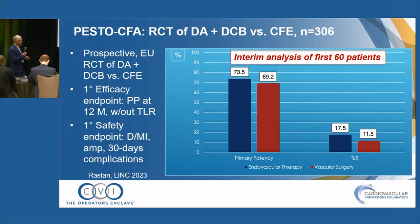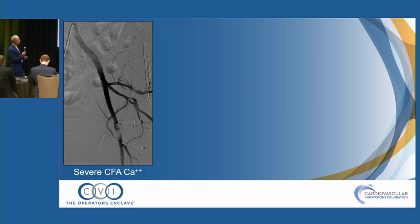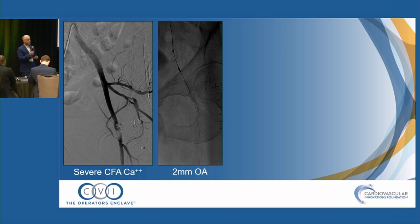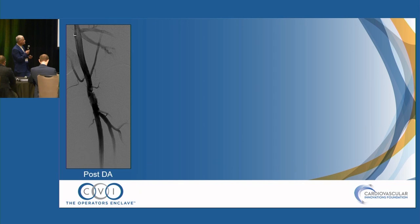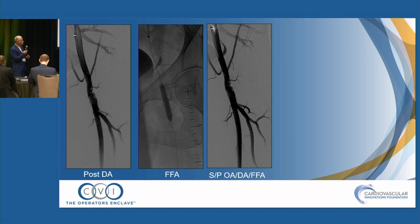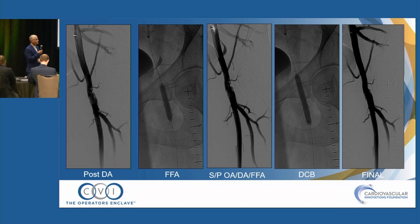Let's start with a case presentation: a 60-year-old male with an isolated common femoral lesion. We elected to utilize combination therapy — initially making a pilot channel with orbital atherectomy, followed by directional atherectomy. We got a very nice acute angiographic result, followed by focus force angioplasty and then a DCB, yielding a really nice angiographic result. I've been following this patient for eight years and he remains completely asymptomatic.